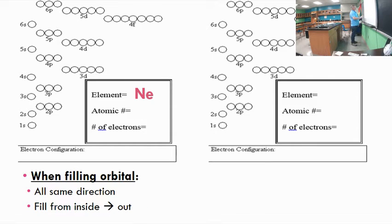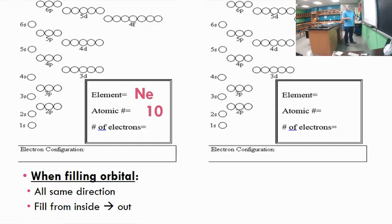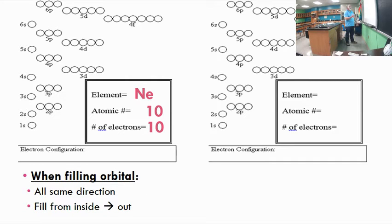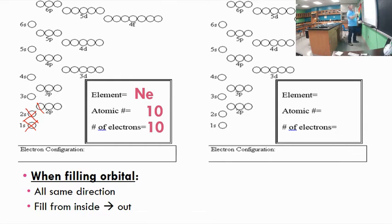Let's do neon. Its atomic number is 10, so it has 10 protons and 10 electrons. Starting at the bottom: electrons 1 and 2 fill 1s; electrons 3 and 4 fill 2s. Electron 5 goes into 2p. Hund's rule: electron 6 gets its own 2p orbital, electron 7 gets its own. Now we double up: electrons 8, 9, and 10 fill the three 2p orbitals. Neon's bubble chart is complete.